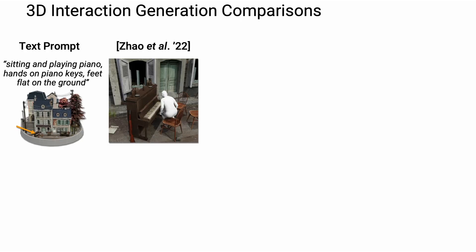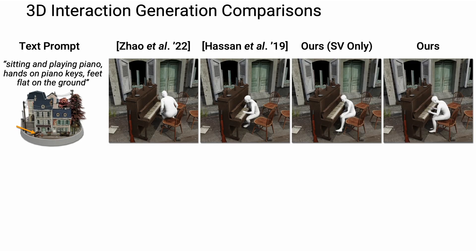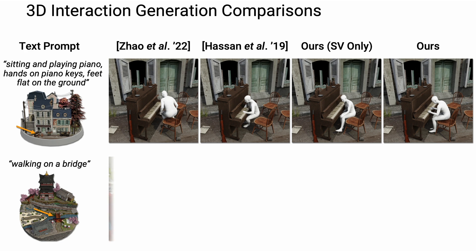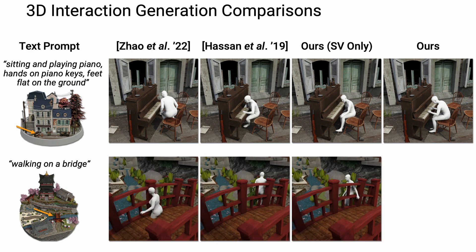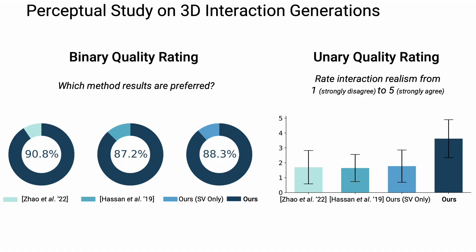Our approach synthesizes more realistic 3D human scene interactions and generalizes better across scene types when compared to baselines that are either trained on indoor interaction data or based on 3D human estimation from a single RGB image. In both binary and unary perceptual studies, participants show a strong preference for our generations.